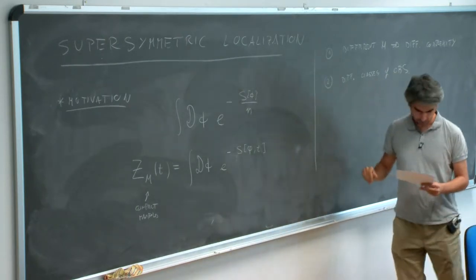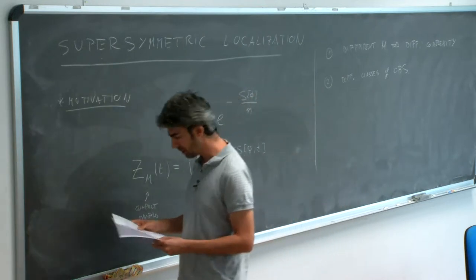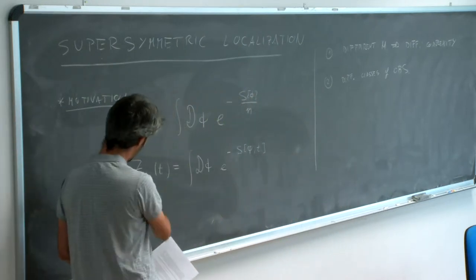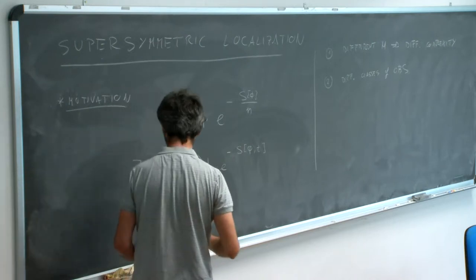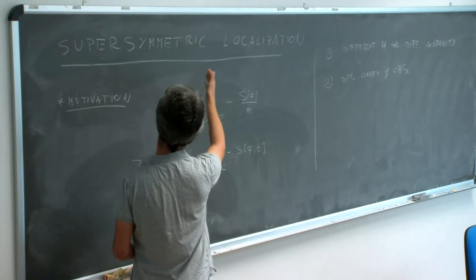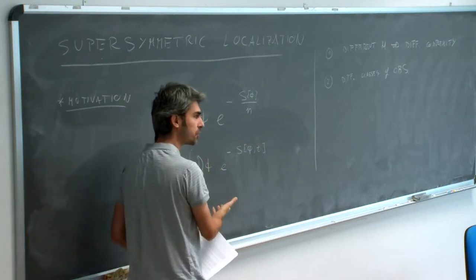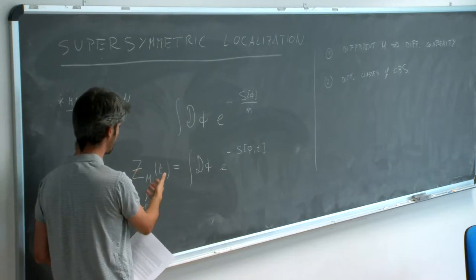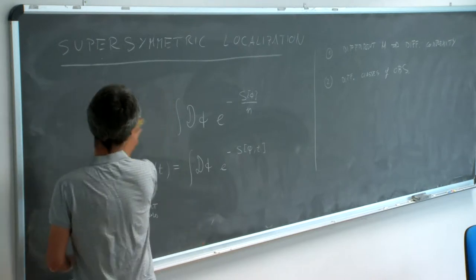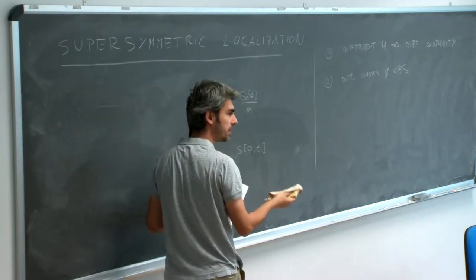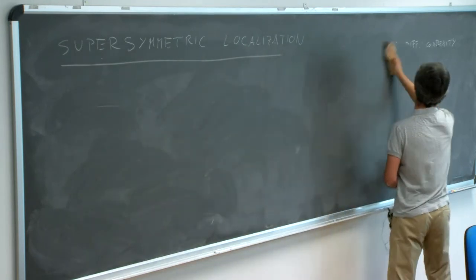Since we want to study quantum field theories on compact and in particular curved manifolds and apply supersymmetric localization—which requires supersymmetry—we need to understand how to preserve supersymmetry on curved manifolds and what type of supersymmetric backgrounds we can turn on. The first thing I would like to address, although briefly, is: given supersymmetry on flat space, how do we preserve supersymmetry on a curved manifold? This turns out to be a non-trivial problem.